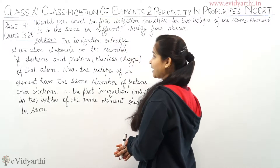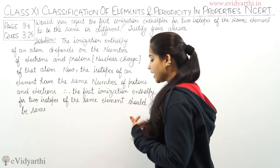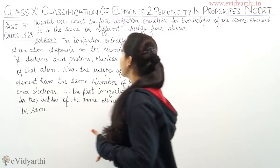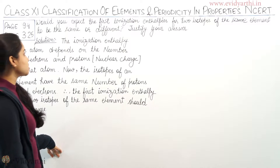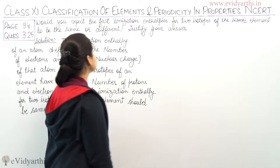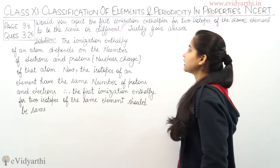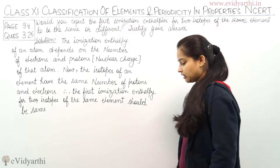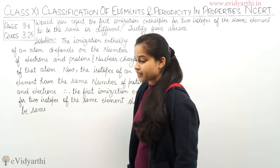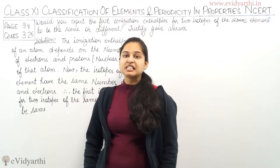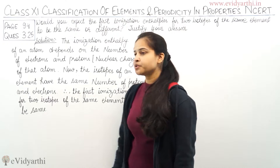The question is: would you expect the first ionization enthalpy for the two isotopes of the same element to be the same or different? Justify your answer. So we need to determine whether the first ionization enthalpy for two isotopes of the same element would be same or different.